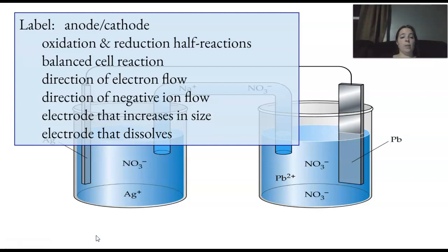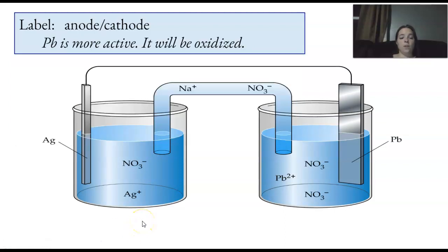All right. We're going to label. So, first off, looking at this, you've got silver, you've got lead. On the activity series, this is second from the bottom. This one's like fourth or fifth from the bottom. This one is more active than this one. So, this is my anode. This is my cathode.